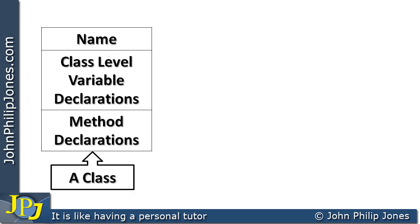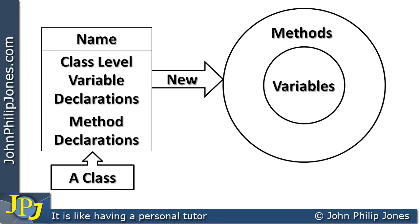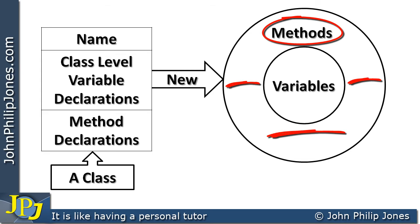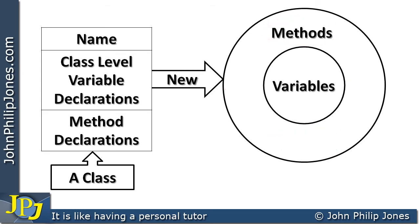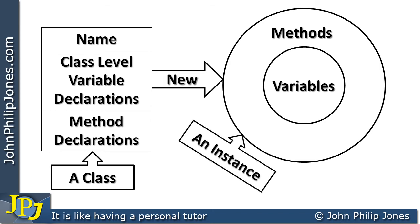I think this is another view that you need to have of a class. When we wish to use the class, we have to create an instance of it, and to do that we use a constructor — we use the word new. That will then produce an instance of this particular class, where we have in the centre variables and in the outer circle methods. We don't want the variables in the middle to be available to the outside world — meaning other objects. We want the methods to be, however. What we can see here is an instance of the class.